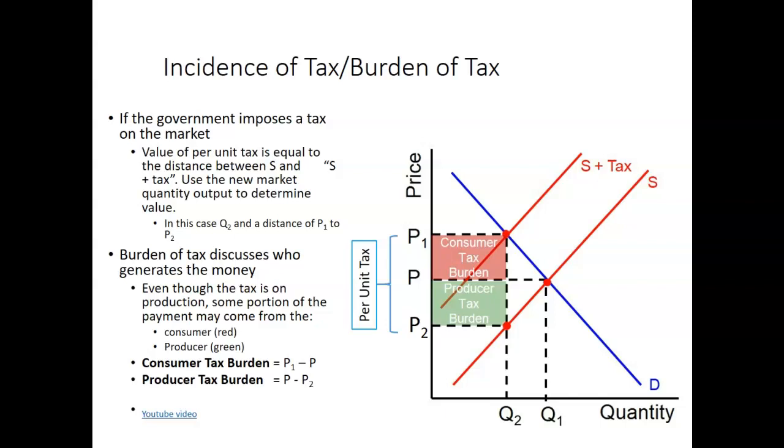How about the producers? Well, originally they got to charge a price of P. Now they functionally only get P2. Why? Because the P1 to P2, that whole area, that's going to the government. That's their tax revenue. That doesn't go to the producers. So producers only get P2 out of this income. So how much do they have to spend? P minus P2 is going to be the producer burden of tax times the quantity. Now we get into the topic called elasticity. We're going to talk even more about how the burden of tax can shift more towards the consumers or the producers. So this topic does come back.